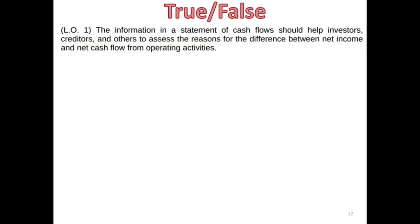Statement one: The information in a statement of cash flow should help investors, creditors, and others assess the reasons for the difference between net income and net cash flow from operating activities. The answer is true. That's one of the major purposes of the cash flow statement — it takes your net income and converts it into cash net income, which is cash flow from operating activities.